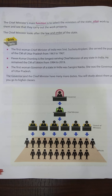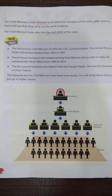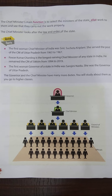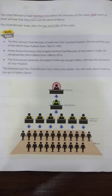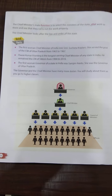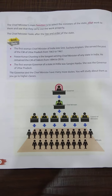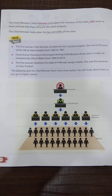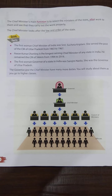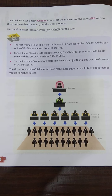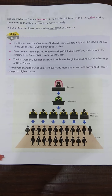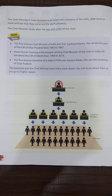The governor and the chief minister have many duties which you will learn in higher classes. For now, at standard third, only this much is enough. In the state government, there is a governor, then the chief minister, and then council of ministers and other officials.